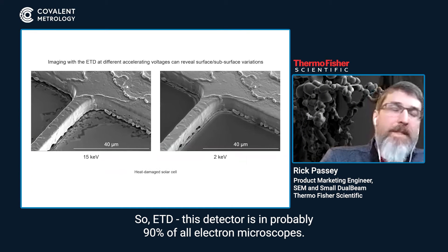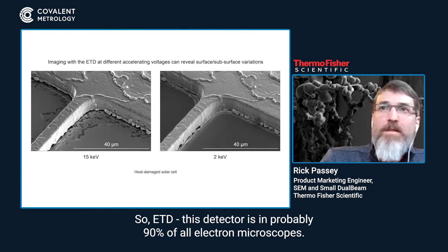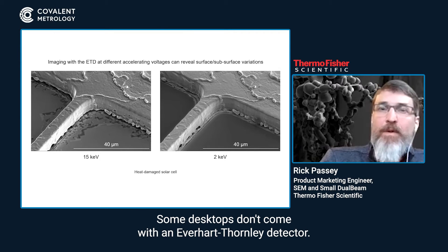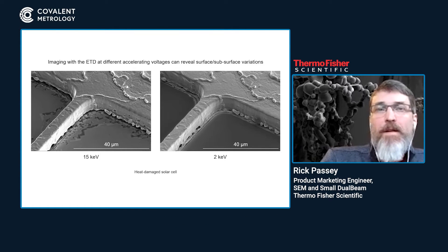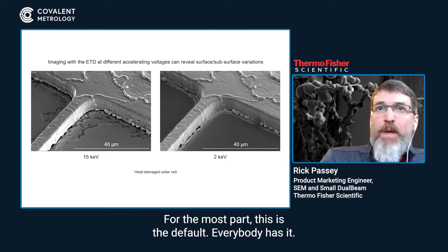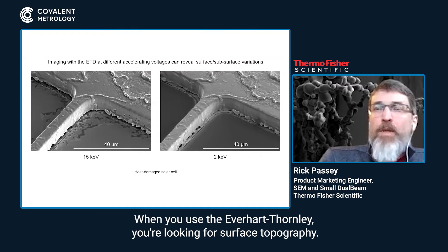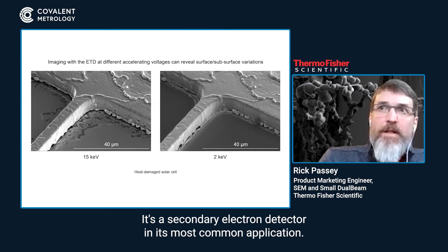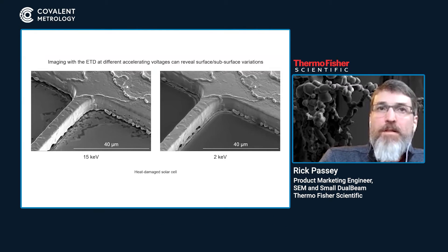The ETD — the Everhart Thornley detector — is in probably 90% of all electron microscopes. Some desktops don't come with one, and very few large full-size SEMs will lack it, but for the most part this is the default. When you use the Everhart Thornley, you're looking for surface topography. It's a secondary electron detector in its most common application.